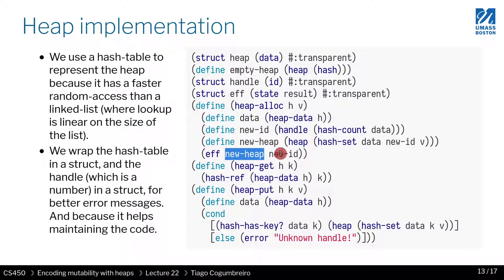Next, heap-get is pretty trivial. The only thing you have to do is you get the hash table and call hash-ref, which just looks up the key k.